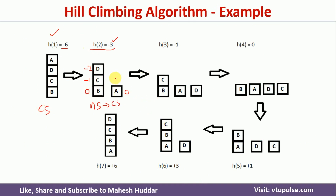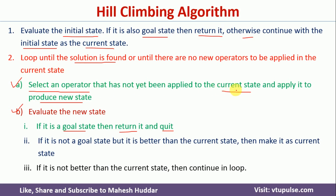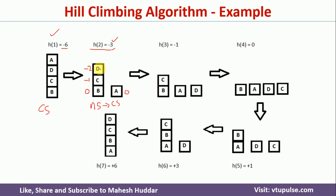We go back to the loop and select another operator: we bring block D down to the ground to produce a new state. This new state is not a goal state. Evaluating it: A, B, and D on the ground all have value 0; below C we have B which is not placed correctly, giving minus 1. The heuristic value is minus 1, which is better than the current state value of minus 3, so this new state becomes the current state.